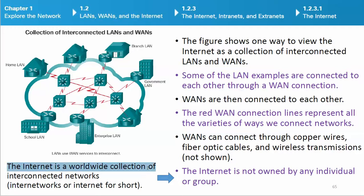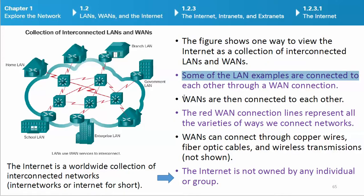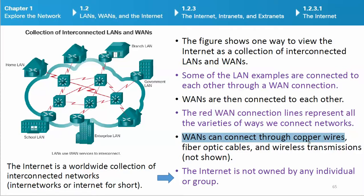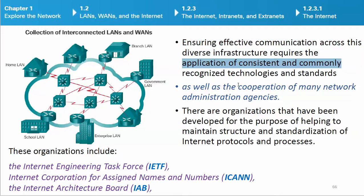The Internet is a worldwide collection of interconnected networks — internetworks, or internet for short. It can be viewed as a collection of interconnected LANs and WANs connected through various WAN connections. WANs can connect through copper wires, fiber optic cables, and wireless transmissions. The Internet is not owned by any individual or group. Ensuring effective communication across this diverse infrastructure requires the application of consistent and commonly recognized technologies and standards, as well as the cooperation of many network administration agencies.